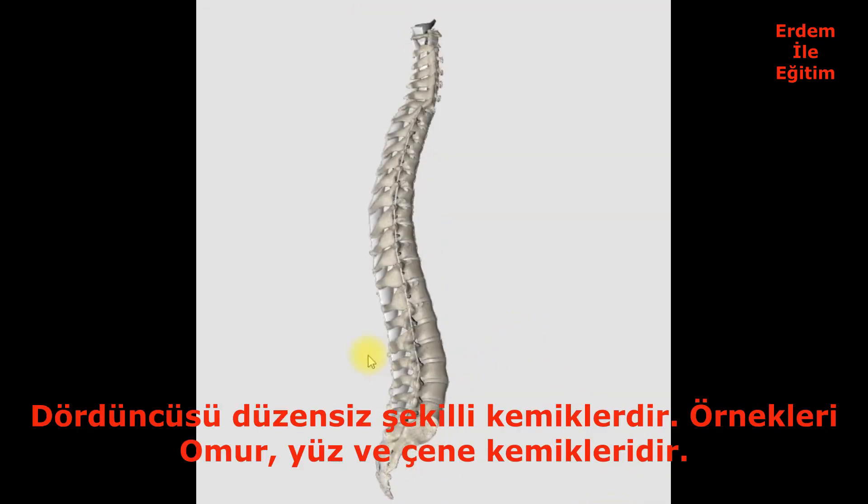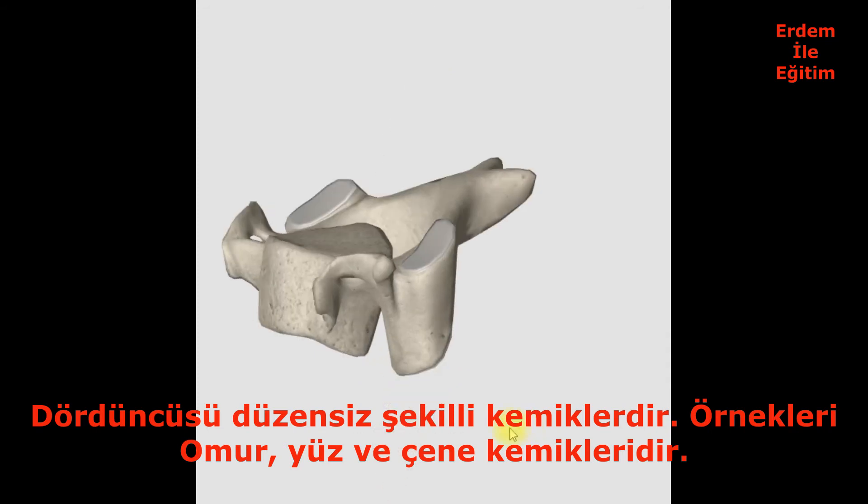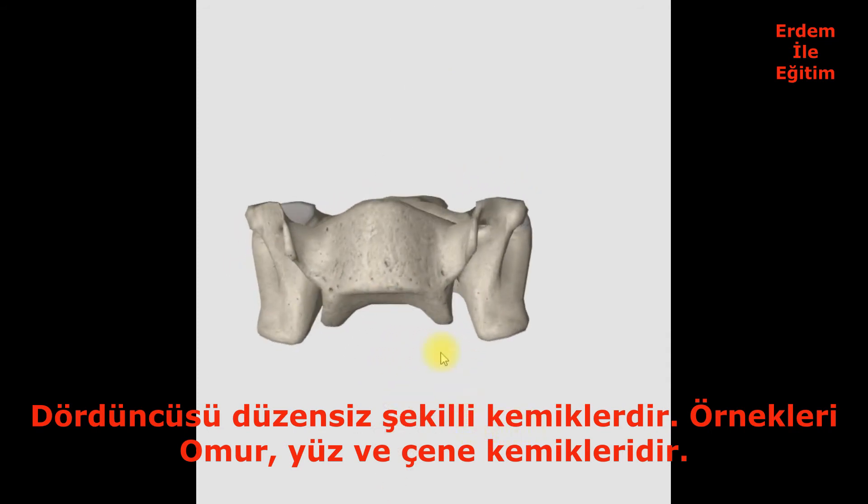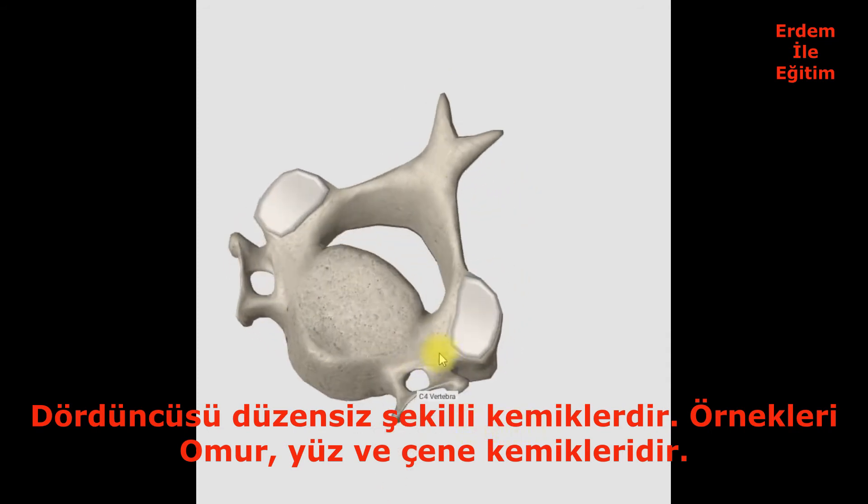The fourth is irregularly shaped bones. Examples are vertebra, face, and jaw bone.